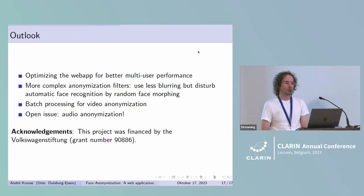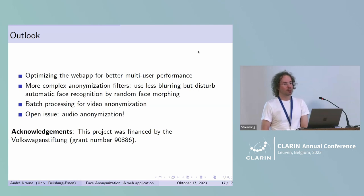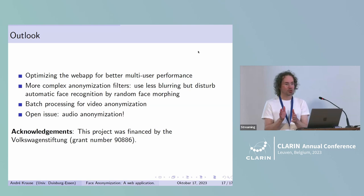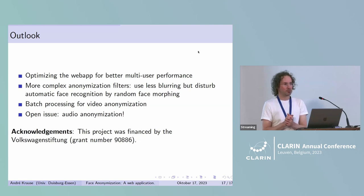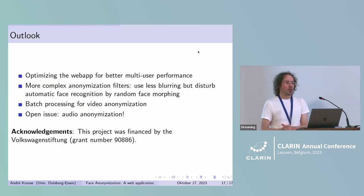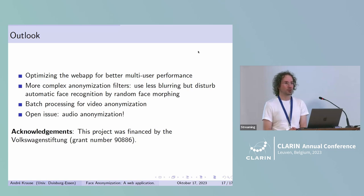As an outlook, we want to further optimize the web application for better multi-user performance. Next, we want to make available more complex anonymization filters that use less blurring — if you use less blurring, you might keep more social cues intact, like gaze direction or head orientation, but you run the risk of de-anonymization. Algorithms like random face morphing might help here. Further, we want to do batch processing for videos. An open issue remains audio anonymization — if you can suggest a tool, I am very happy to hear from you.